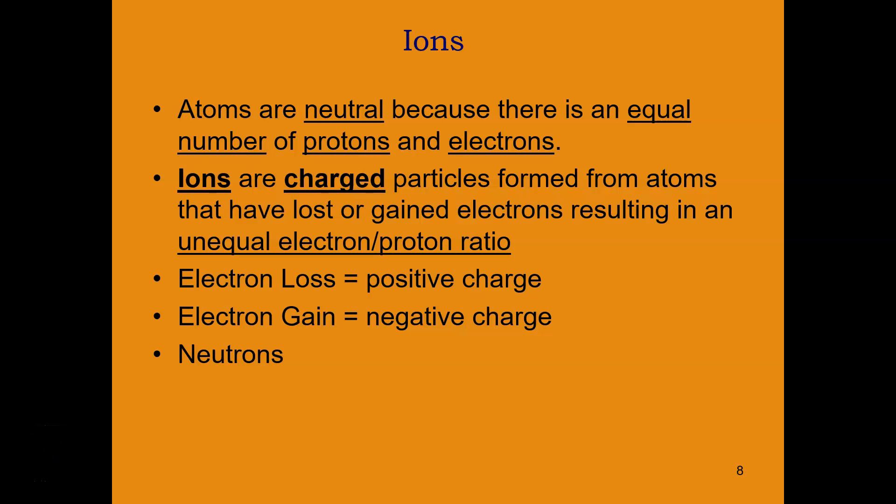Ions. Atoms are neutral because there's an equal amount of protons and electrons. Ions are charged particles formed from atoms that have lost or gained electrons, resulting in an unequal electron-proton ratio. If they have an electron loss, it has a positive charge. If it has electron gain, it has a negative charge.